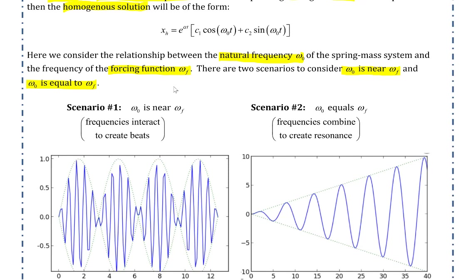The first scenario: when ω₀ is near ω_f, we will see the presence of beats, caused by the interaction of these two frequencies. Sometimes the two frequencies will add to each other, increasing amplitudes, and sometimes they will cancel each other out, reducing the amplitude of the oscillations.